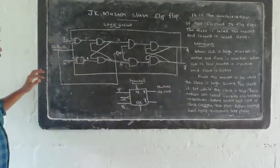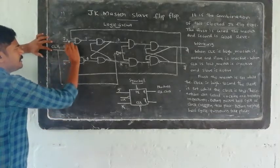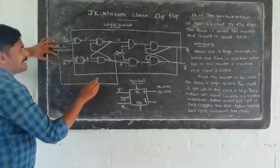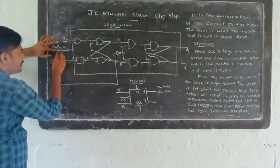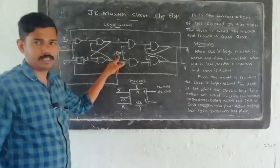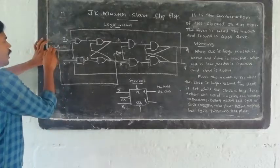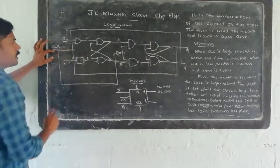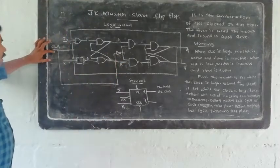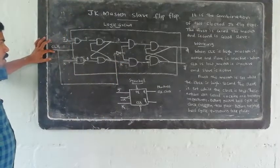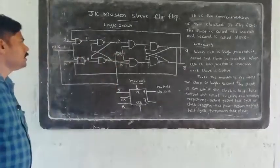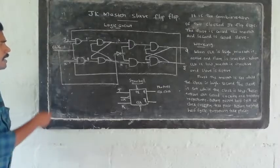Now, for the first JK flip-flop, the clock is connected to the master. The slave clock is the complement of the master clock. When the master clock is high (1), the slave clock is low (0). When the master clock is low (0), the slave clock is high (1). This is how the master-slave flip-flop works.